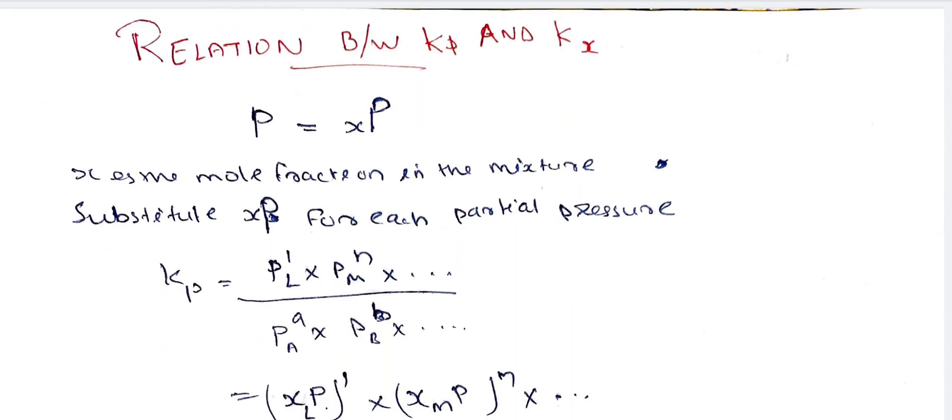Next, we derive the relationship between Kp and Kx. We start with partial pressure P equal to mole fraction x into total pressure P. Here x is the mole fraction in the mixture. We substitute xP for each partial pressure in the Kp expression.